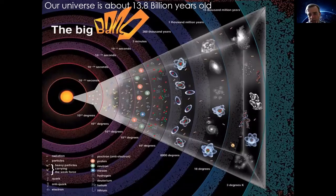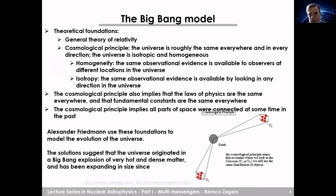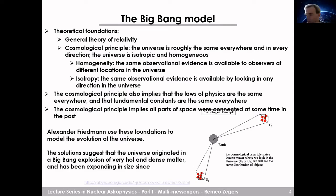I'm going to talk a little bit about the Big Bang just to give a big overview. The main theoretical foundations come from the general theory of relativity and the cosmological principle — made famous by Albert Einstein. The cosmological principle basically states that the universe is roughly the same everywhere and in every direction, meaning the universe is isotropic and homogeneous. This means that observational evidence is available to observers at different locations and by looking in any direction.